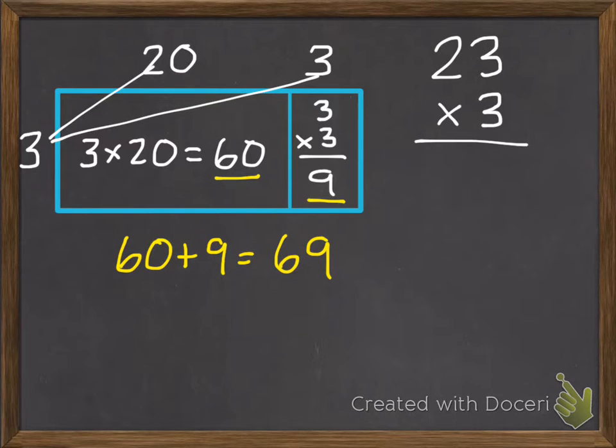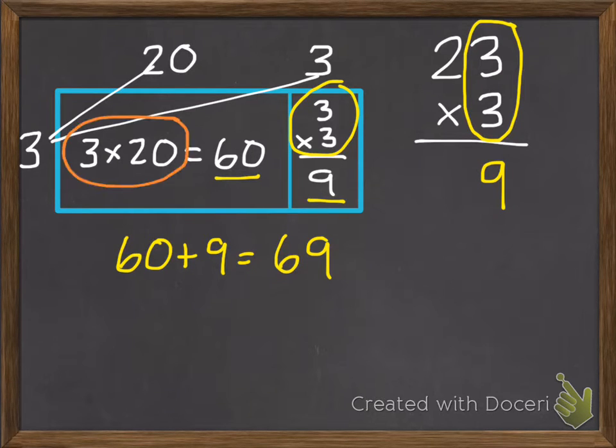We can do these exact same steps without having to draw a model. So this 3 times 3 I have right here, I also have right here. So 3 times 3 is 9. Then, I also have this 3 times 20, right here. So 3 times 20. We don't see the 0, because the 3 is in the 1 spot. But that 2 is in the 10 spot, so that 2 really is a 20. So we're doing 3 times 20.